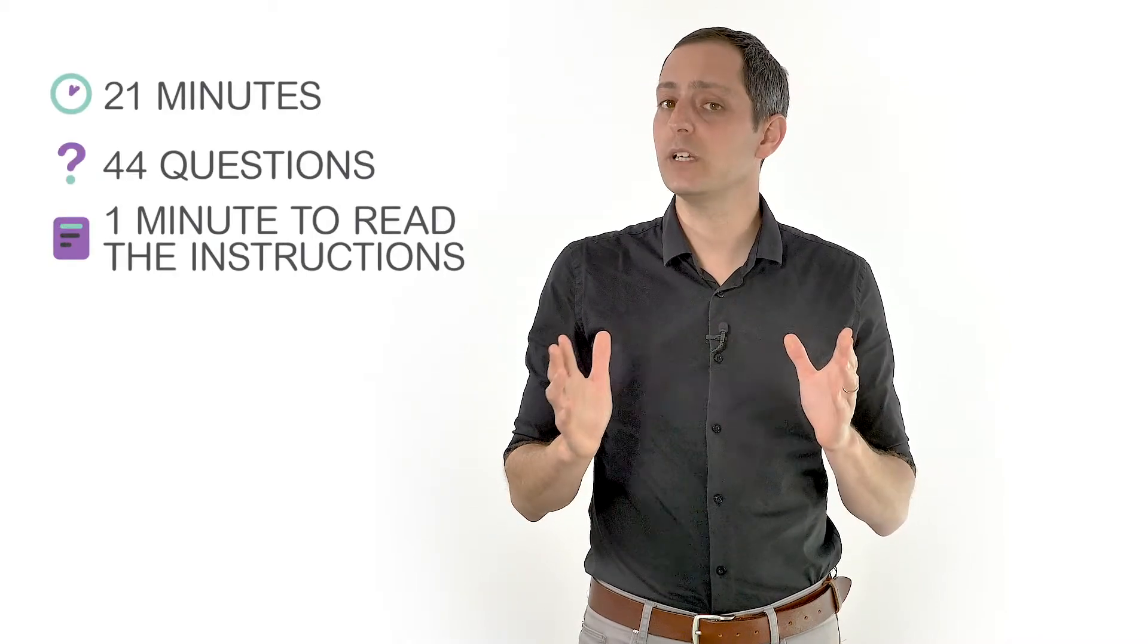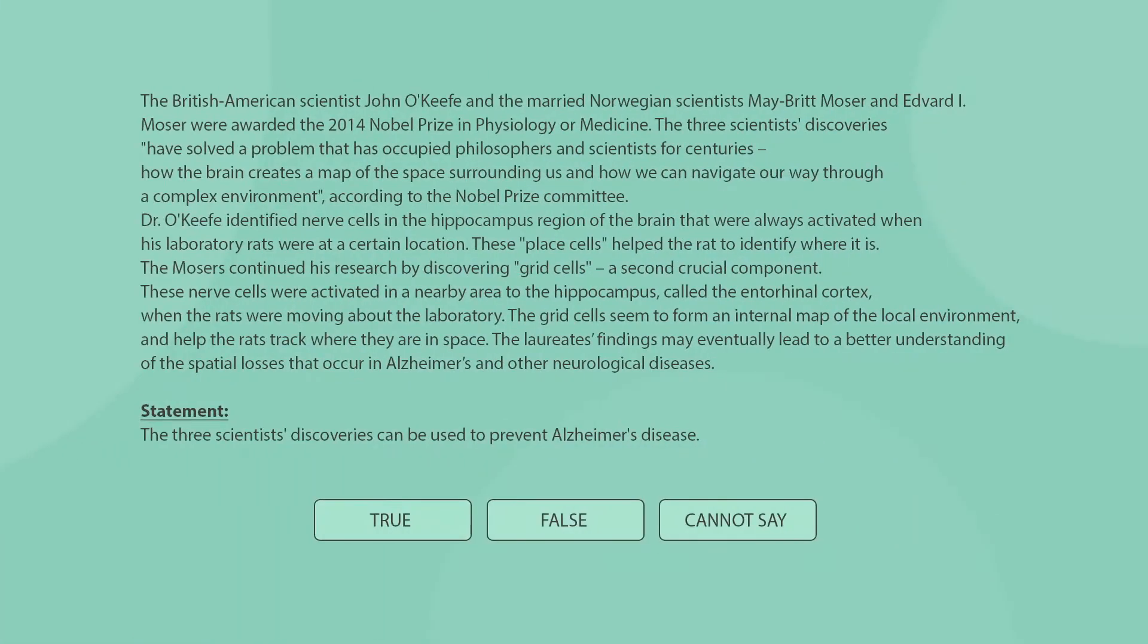This subtest assesses your reading comprehension and verbal critical reasoning skills. You'll have 21 minutes to answer 44 questions. That's less than 30 seconds per question. Here's a sample question that resembles those you'll see on the real exam. Pause the video to read it carefully.